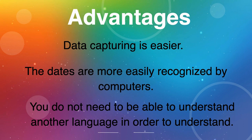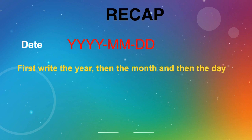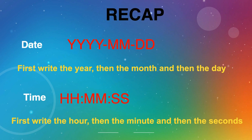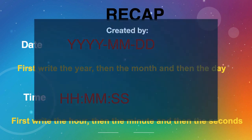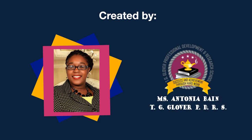So knowing that, let's do a quick recap. When we look at the date in SI format, we have to remember that we need to say the year, then the month, and then the day. When we look at time in SI format, we need to say first the hour, then the minute, and then the second. Boys and girls, you did an awesome job today. Thank you for watching. This lesson was created by Miss Antonia Bay.